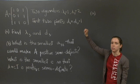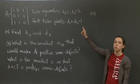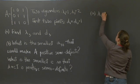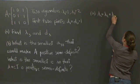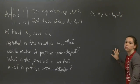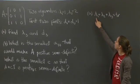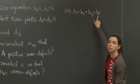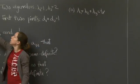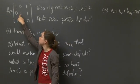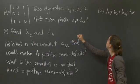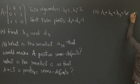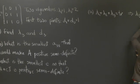What else do you know about eigenvalues and the matrix? You know that the sum of all the eigenvalues of the matrix is equal to the trace of the matrix. So λ1 plus λ2 plus λ3 equals the trace. In this case, you have 1 plus 2 plus λ3 equals the trace. The trace is the sum of the diagonal entries, so come over here: the trace is 1 plus 1 plus 0, which equals 2. So we have 3 plus λ3 equals 2.